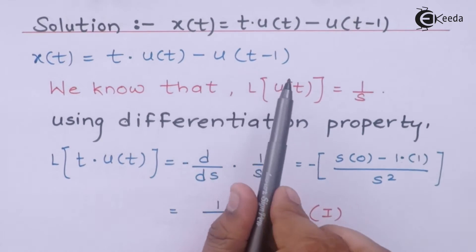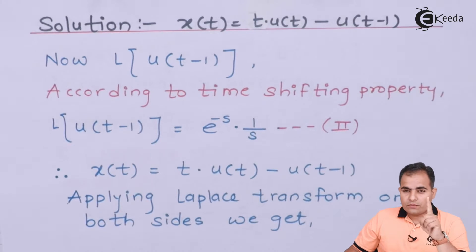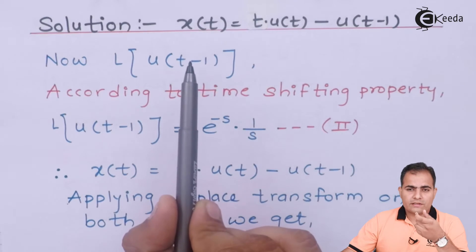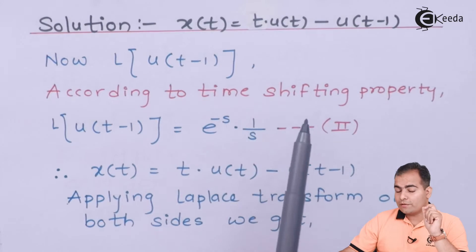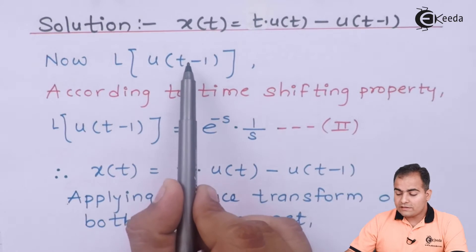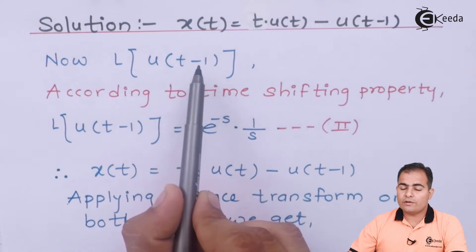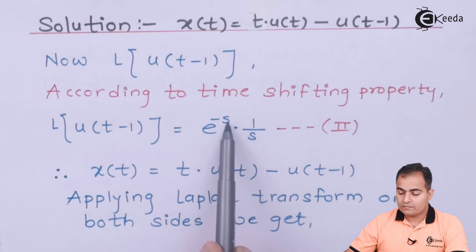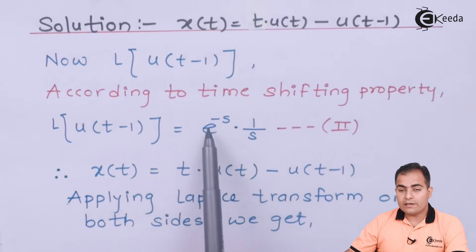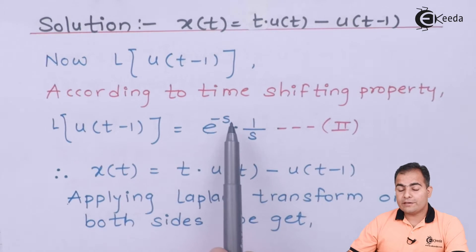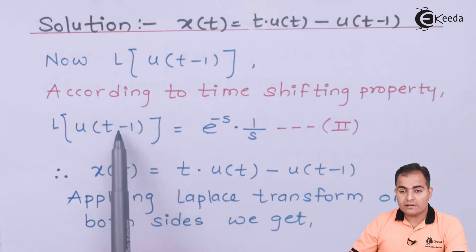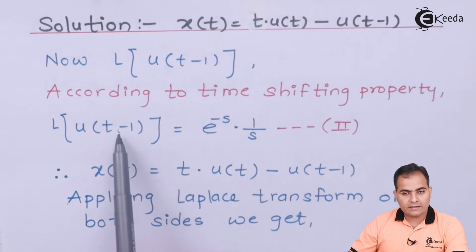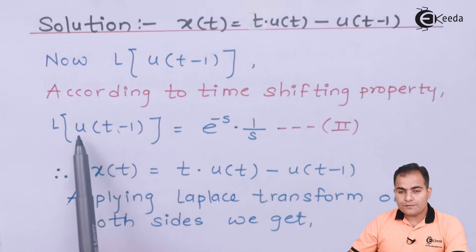Now we solve the second part, u(t-1). The term t-1 means the function is delayed or advanced. Whenever a delayed or advanced term appears, always give priority to the time shifting property. According to the time shifting property, if the function is delayed by 1, multiply e to the power of s by minus 1, giving e^(-s). If we had minus 2, the result would be e^(-2s); if we had u(t+2), the result would be e^(+2s). Right now we have minus 1, so the result is e^(-s) times the Laplace transform of u(t), which is 1/s.